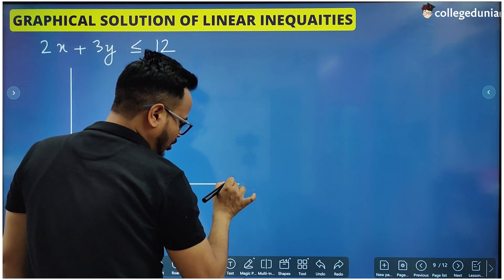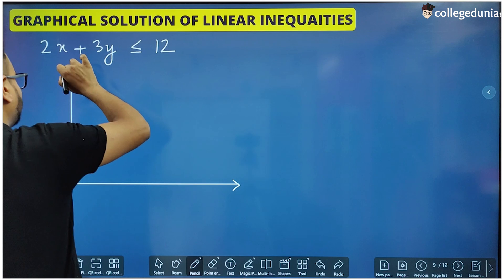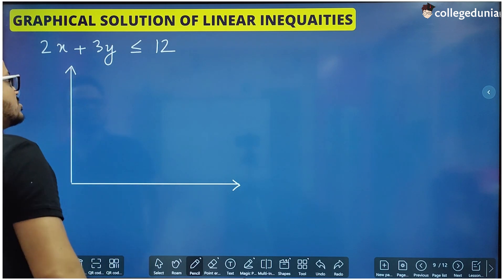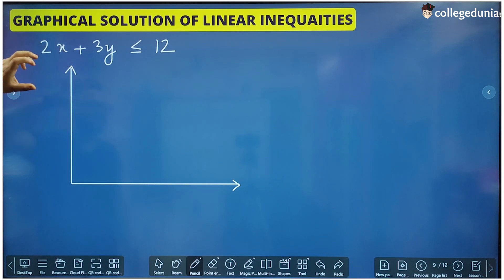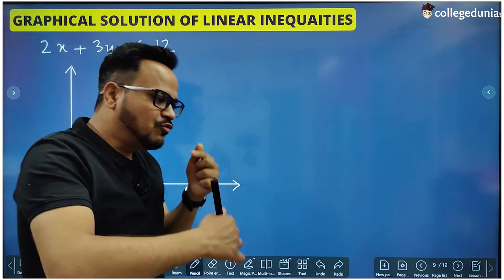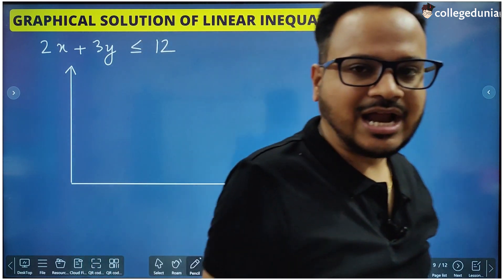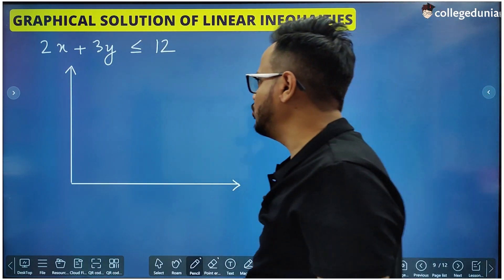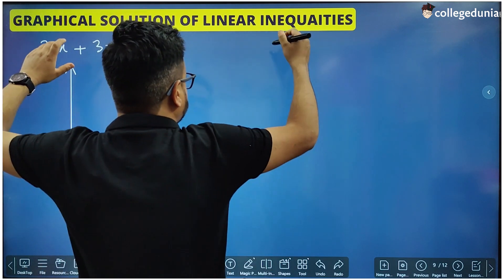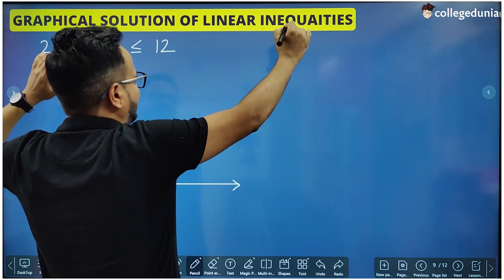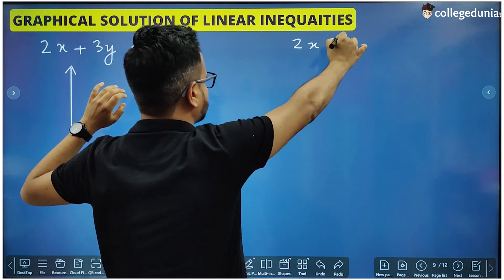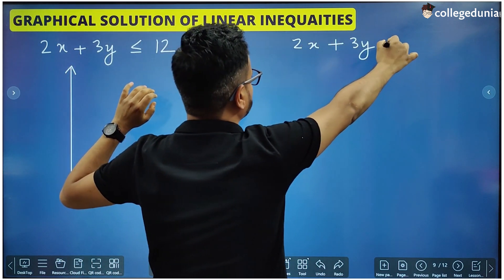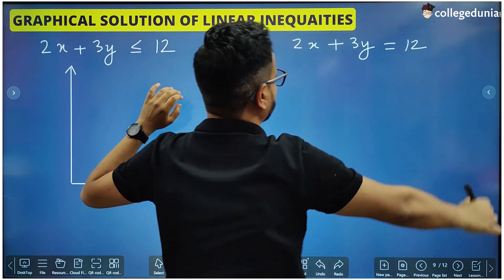For drawing the graph we will use the simple technique we have already used in class 10. How do you draw the graph of an equation? You just put some random values of one variable, find the value of the other variable, plot those points — and this is what we are going to do here. To make the graph, just forget that there is a greater than or less than sign and assume that you have an equal to sign.